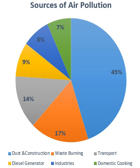Traffic congestion reduces average traffic speed. At low speeds, scientific studies reveal vehicles burn fuel inefficiently and pollute more per trip. A study in the United States found that for the same trip, cars consumed more fuel and polluted more if traffic was congested than when traffic flowed freely. At average trip speeds between 20 and 40 km/h, a car's pollutant emission was twice as much as when the average speed was 55 to 75 km/h.